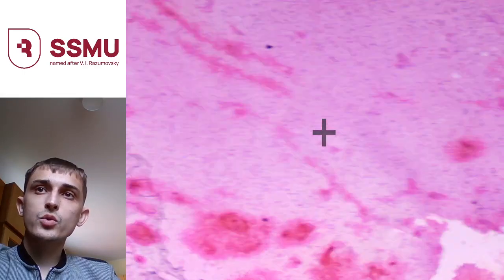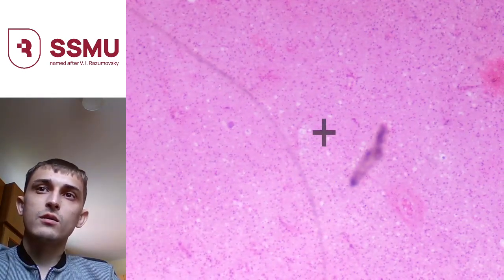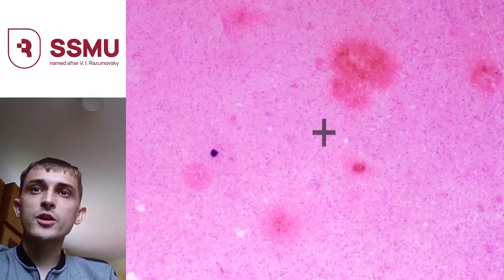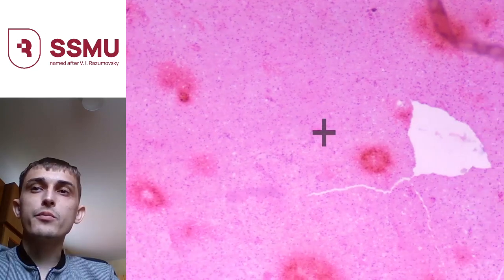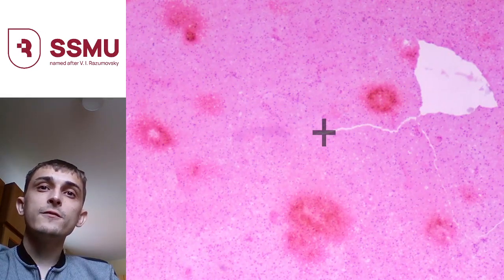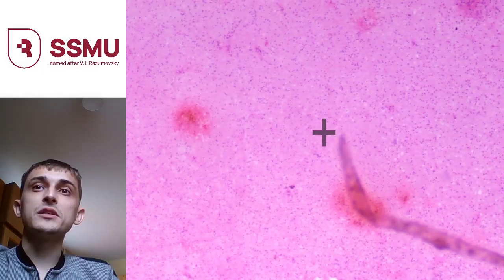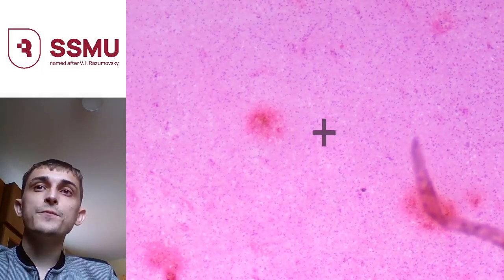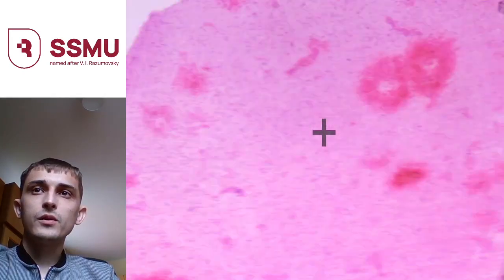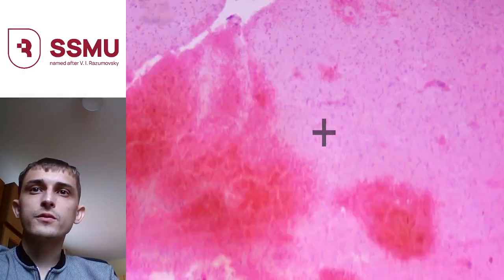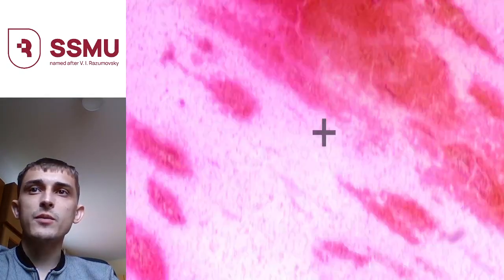We should also identify the organ. The organ that has a homogenous structure with a lot of cells is mostly the brain. By these features we may make a conclusion that on this slide we can see hemorrhagic stroke. We may also note a lot of red areas and many places with hemorrhages.